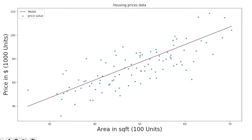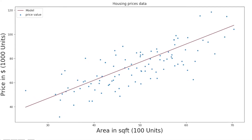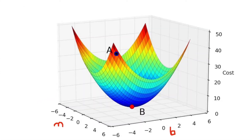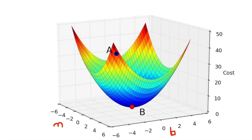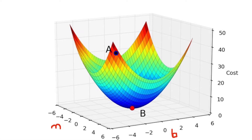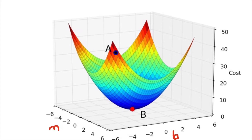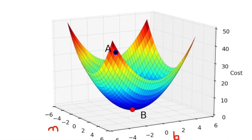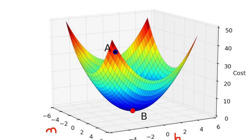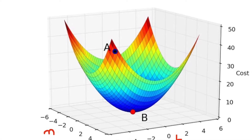Interestingly, if you plot the error against the values of m and b, you get a convex-shaped function. There is exactly one point where the error is minimum — this is called the global minimum. This implies that there is a combination of m and b where the error is the least.